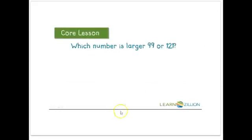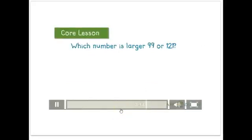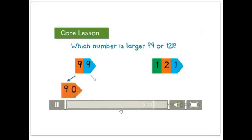Which number is larger, 99 or 121? The digits in these numbers are very different. 99 has 2 large digits, and 121 has 3 smaller digits. The 9 in 99 is worth 90, and the other 9 is worth just 9.